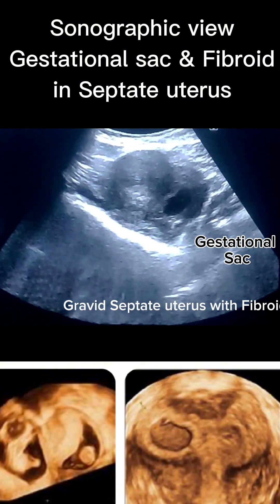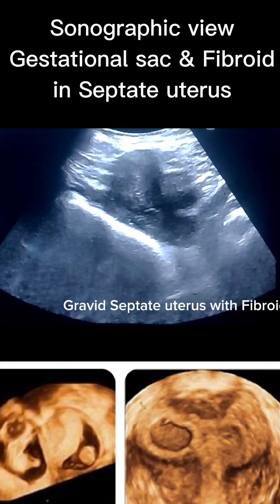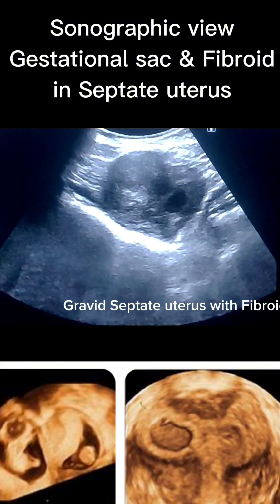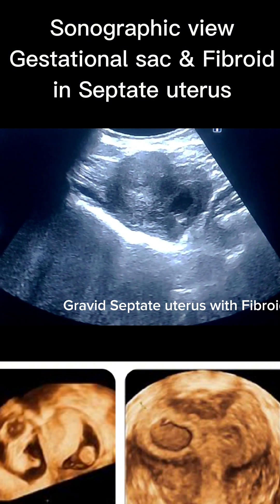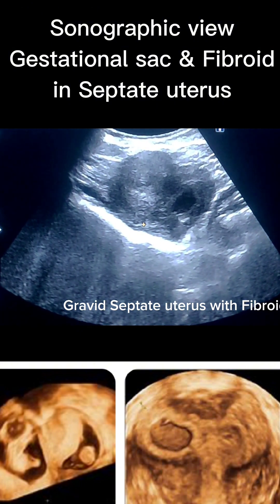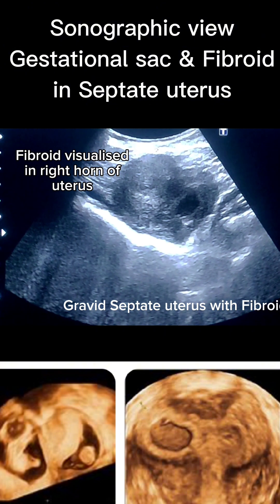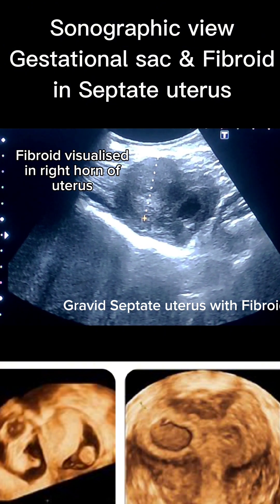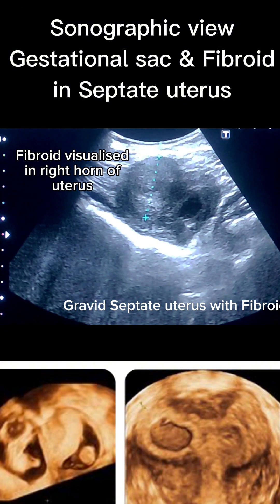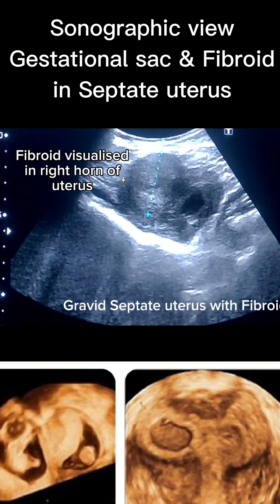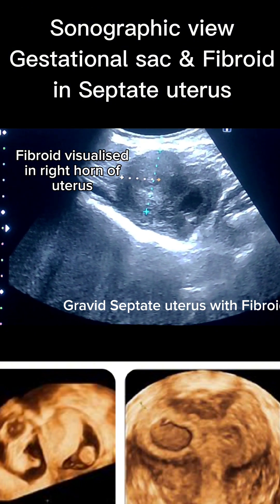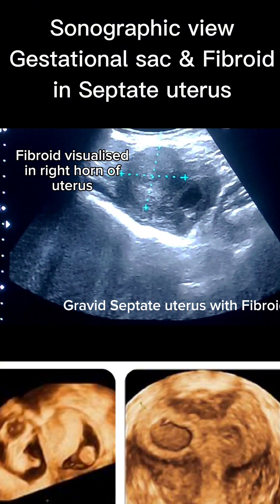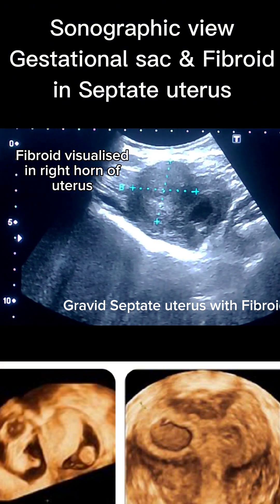In the right horn of the uterus, a well-defined hypoechoic mass is identified in the anterior wall, suggestive of a fibroid. It is homogeneously hypoechoic, located in the anterior myometrium near the fundus of the right horn. No internal vascularity or degeneration was seen on color Doppler.